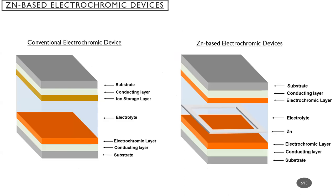Here is a demonstration comparing conventional electrochromic devices and zinc anode-based electrochromic devices. Conventional electrochromic devices possess one ion storage layer and one electrochromic layer. However, for zinc anode-based electrochromic devices, we replace the ion storage layer with another electrochromic layer, as shown on the right side, and we also insert a piece of zinc foil between the two electrochromic layers.